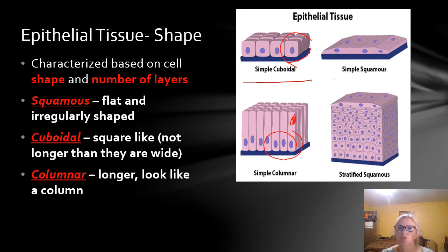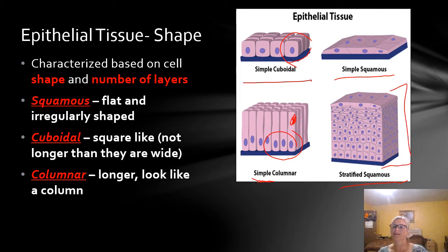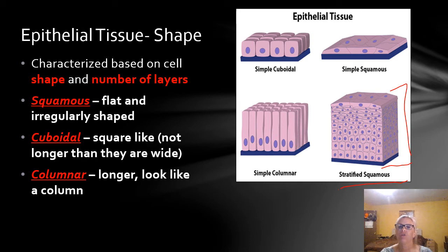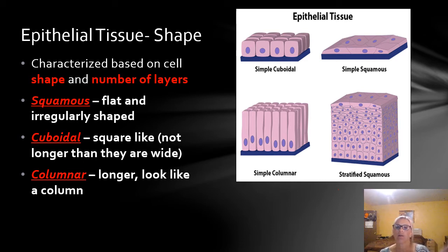Looking at these pictures, some say simple and one says stratified. We'll look at that difference in the next slide. To review: we've got our simple cuboidal at the top because it is cube-shaped. We have our simple squamous at the top right — squamous is flat and doesn't have a regular shape. And then we have our simple columnar on the bottom left because it is column-shaped.